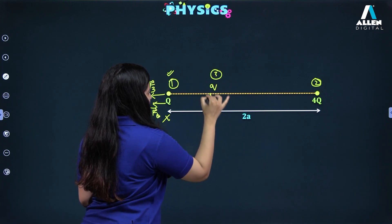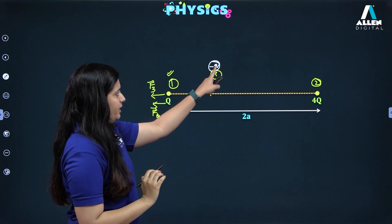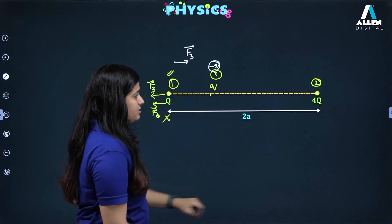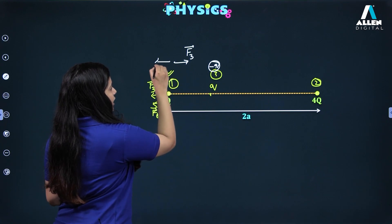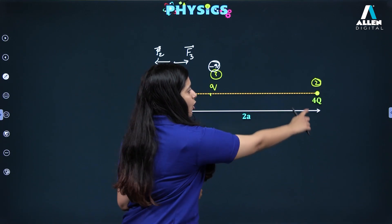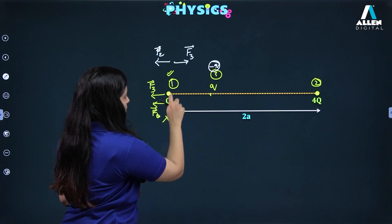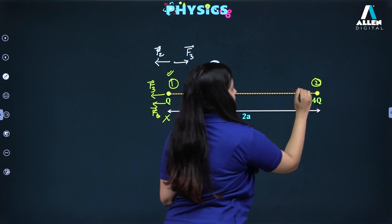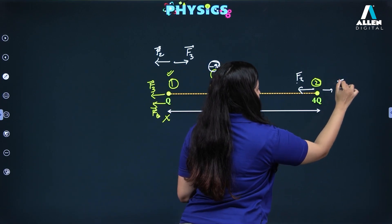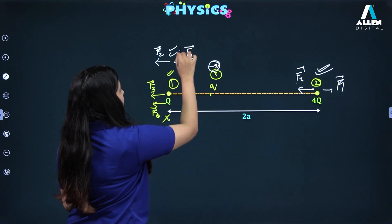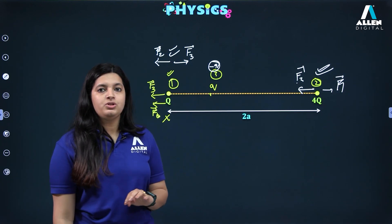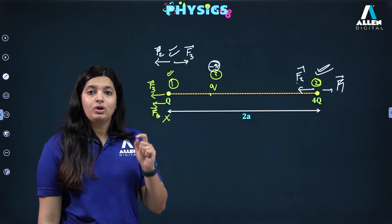Now assume the third charge is negative (−q). For charge Q: the negative third charge attracts it (F3 toward the center) while 4Q repels it (F away from center) — forces oppose each other, so equilibrium is possible. For charge 4Q: the negative third charge attracts it and charge Q repels it — again forces oppose, so equilibrium is possible. Therefore, the third charge must be negative in nature.